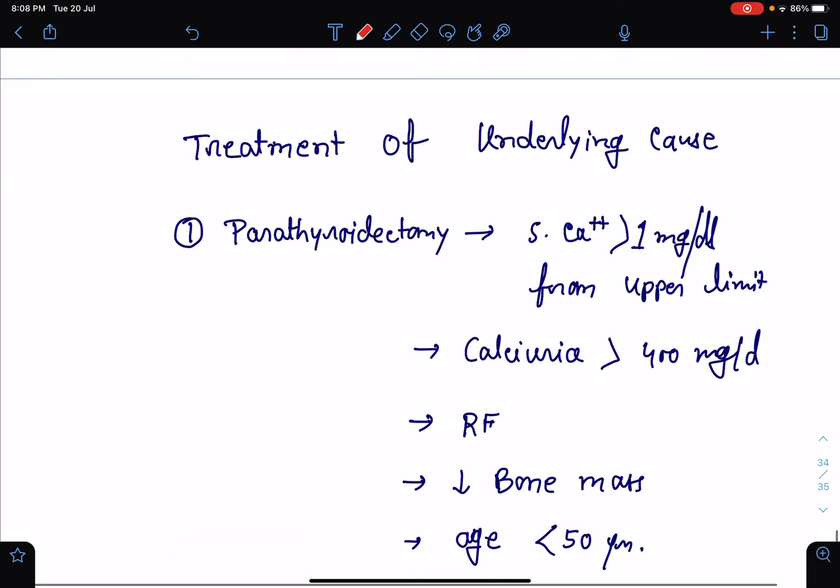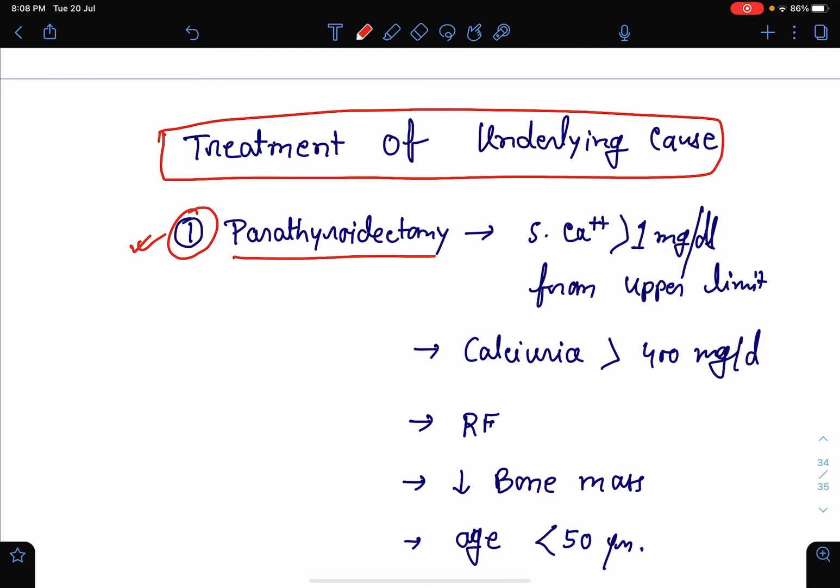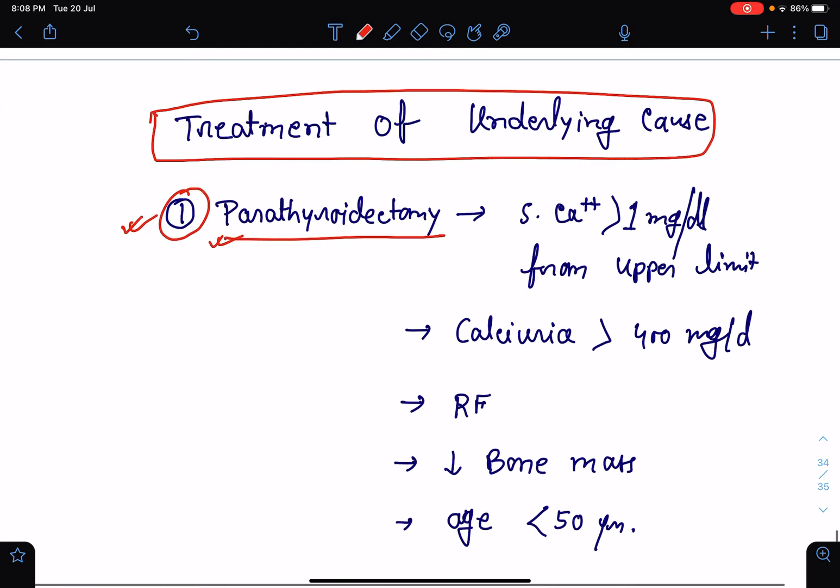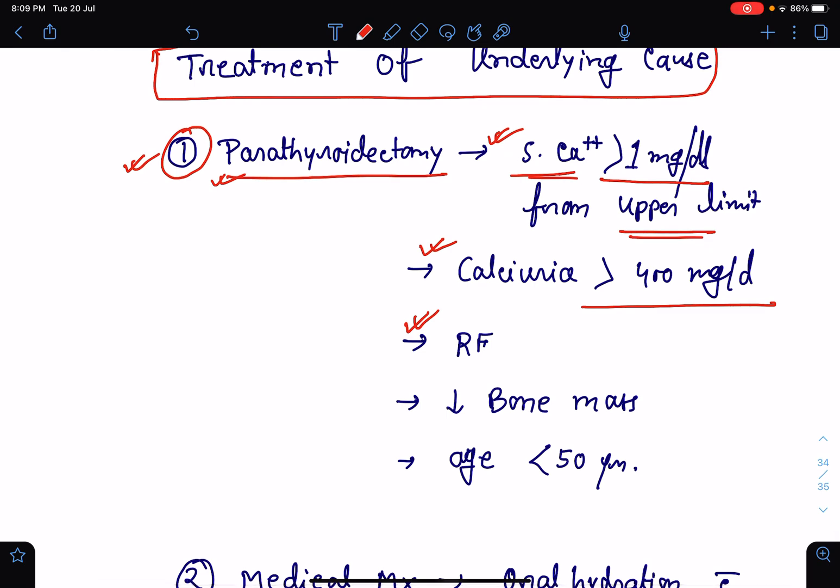Lastly and very importantly, treatment of underlying cause has to be done. If we talk about primary hyperparathyroidism, parathyroidectomy should be done. But not in all cases. The mild cases, asymptomatic cases have a benign course and do not require any surgical intervention. But if it is a case of severe hypercalcemia or if serum calcium level is more than 1 mg per deciliter above the upper limit, or if there is calciuria of more than 400 mg per day, if the patient is having renal failure or renal insufficiency, reduction in the bone mass or age less than 50 years, if these criteria are fulfilled, it is always best to undergo parathyroidectomy. It will resolve the hypercalcemia.